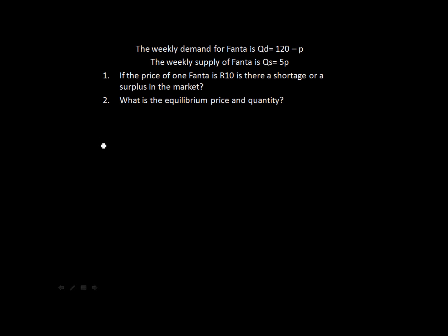We can do this algebraically or graphically, but we'll use our mathematical functions. We know that quantity demanded equals 120 minus P and quantity supplied equals 5P. With the price of Fanta at 10 Rand, we fill it in: 120 minus 10 equals 110. So our quantity demanded is 110 cans of Fanta per week.